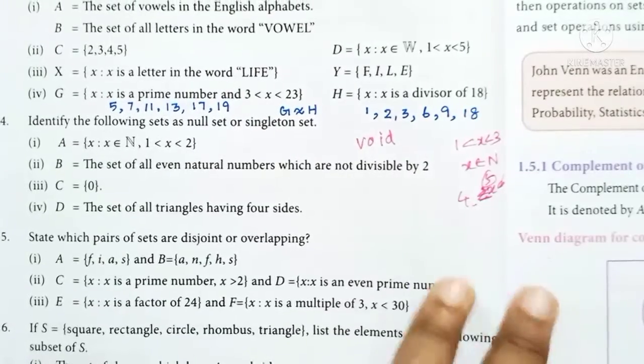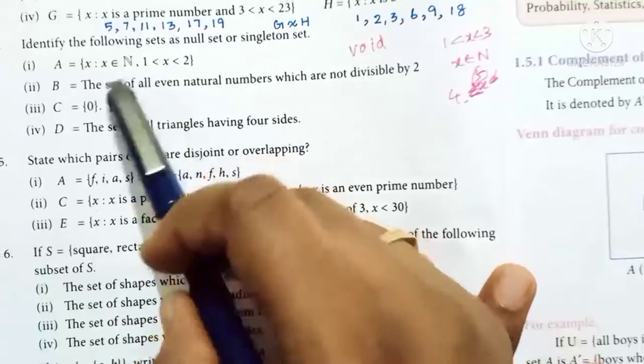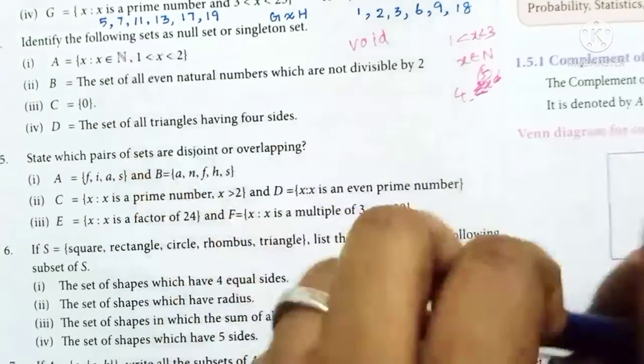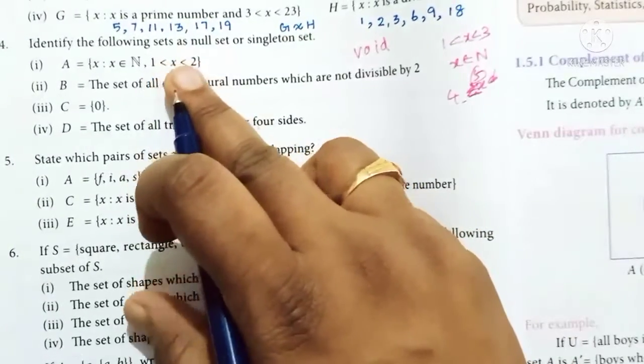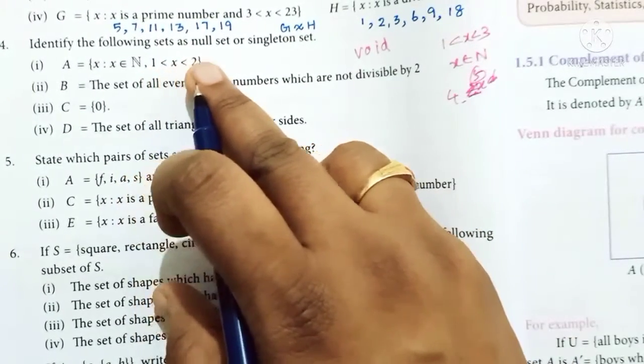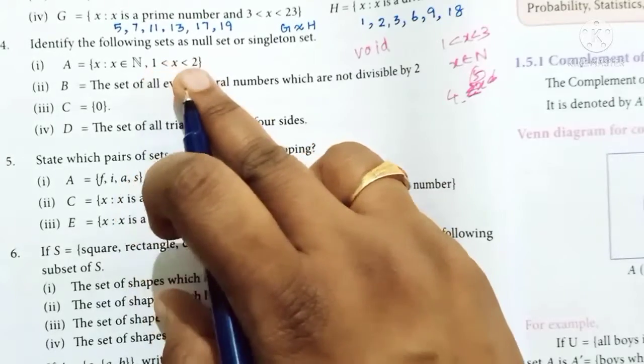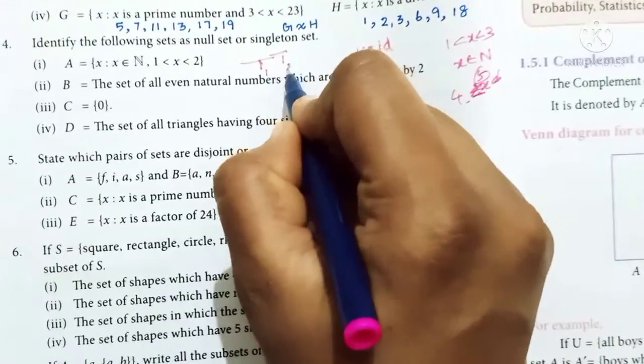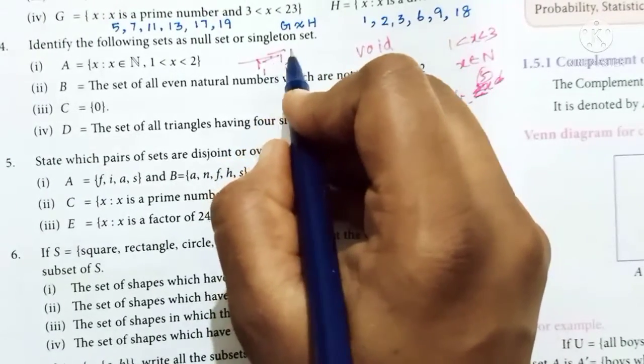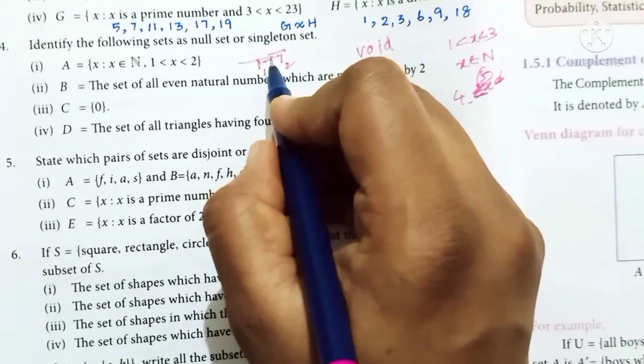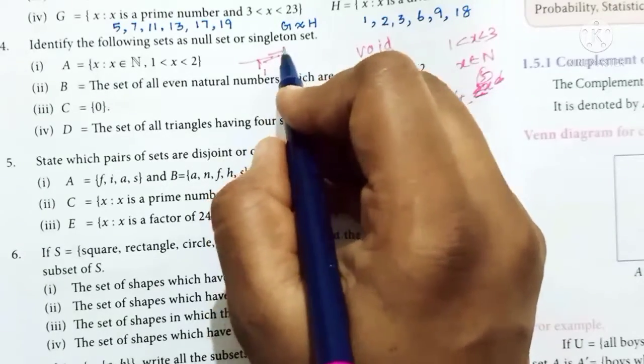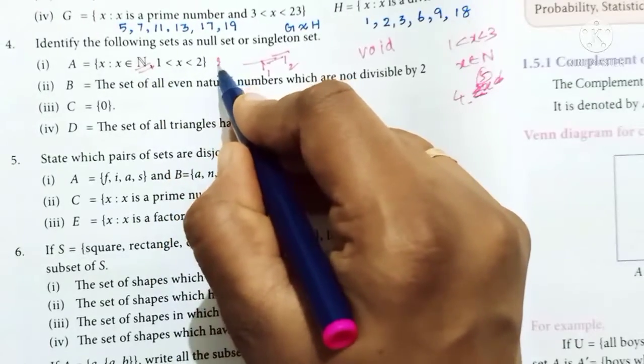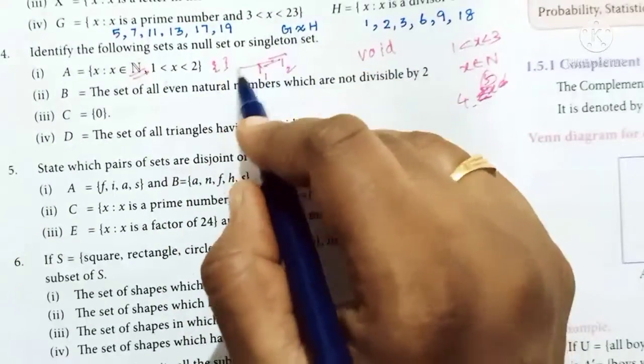Now let's solve these. First subdivision: A = {x | x ∈ ℕ, 1 < x < 2}. On the real line, between 1 and 2, we have real numbers like 1.3, 1.2, 1.9, but no natural numbers. So A is a null set.